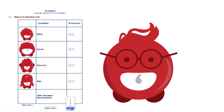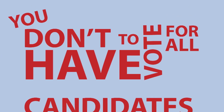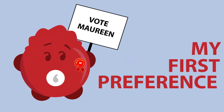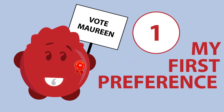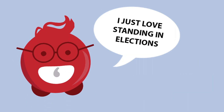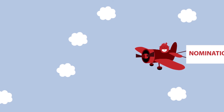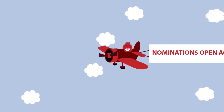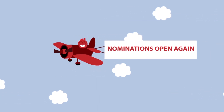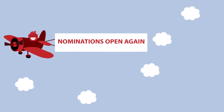However, you don't have to vote for all candidates, as long as you choose at least one first preference. You can also vote for Ron, who stands in all elections. And if Ron wins, the nominations will be reopened, and the election process will start all over again.